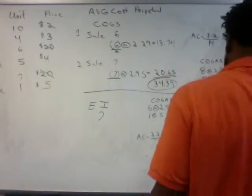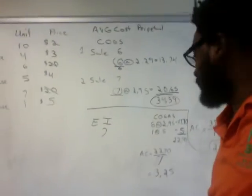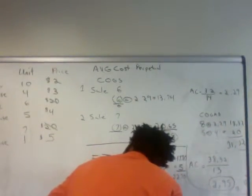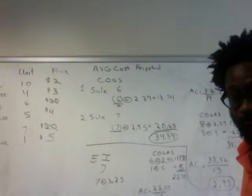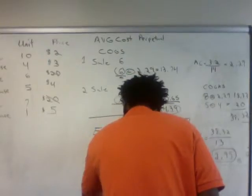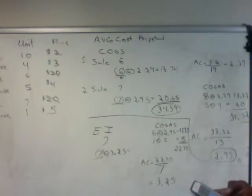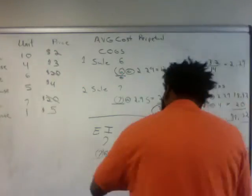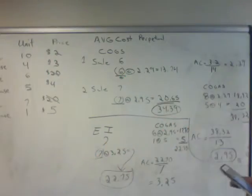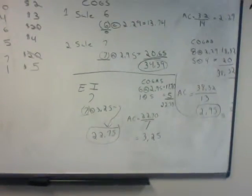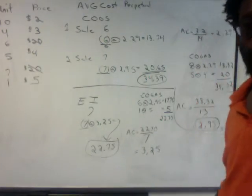Once we divide $22.70 by seven units, it gives us $3.25. We always round to two decimal points. So seven units are going to stay in ending inventory at an average cost of $3.25. We're going to take $3.25, multiply it times seven, and it will give us $22.75. It might differ slightly from $22.70 because of rounding — so don't worry about that, that's the right answer.